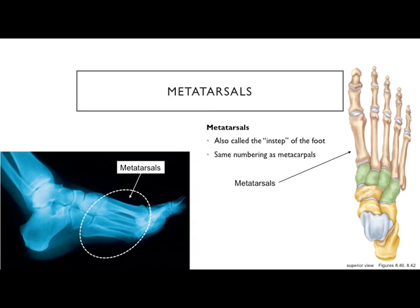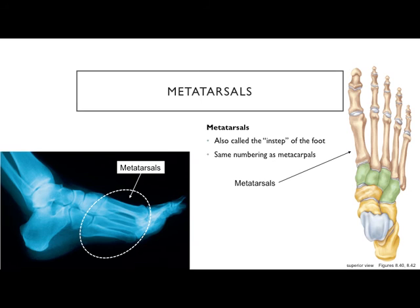From your chapter 10 review: the instep of the foot is made up of the metatarsals — same way the palm of the hand is made up of metacarpals, but in the foot they're metatarsals. The same phalanx naming system applies: proximal, middle, and distal, numbered one through five starting with the big toe. In anatomical position, the foot starts most medially at one and goes to five moving outward — the opposite direction from the hand.